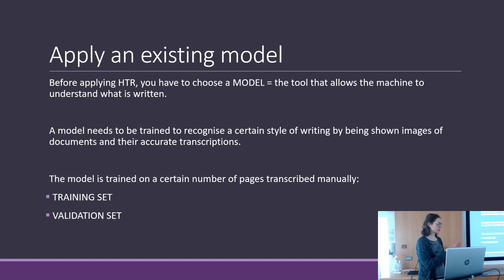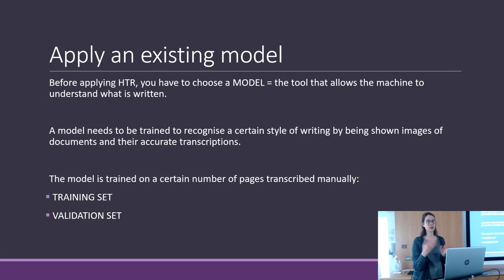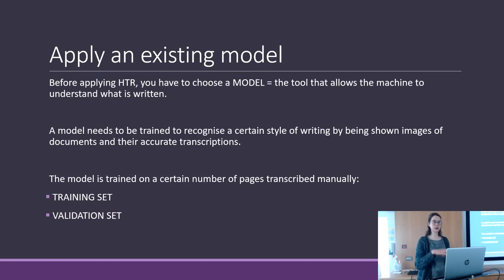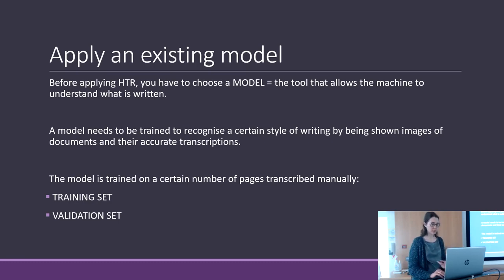The machine learns from some pages and then checks itself on a validation page. If it hasn't obtained good quality, it learns again and checks itself again. It does this for many, many times.